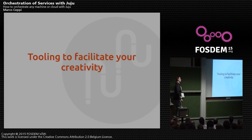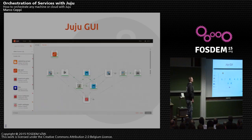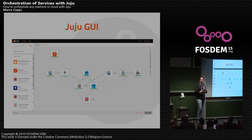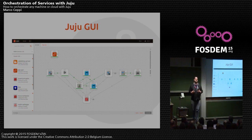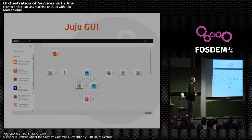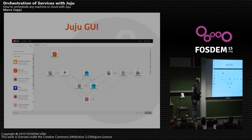Let's talk about the tooling we have to facilitate your creativity. The Juju GUI is arguably the best component here — I like to call it manager mode, but really it's introspection mode. This is how you can visualize everything you're working with in your environment in one go. Each and every one of these charms represents a service you have deployed, and you can see all the relationships between the different services.